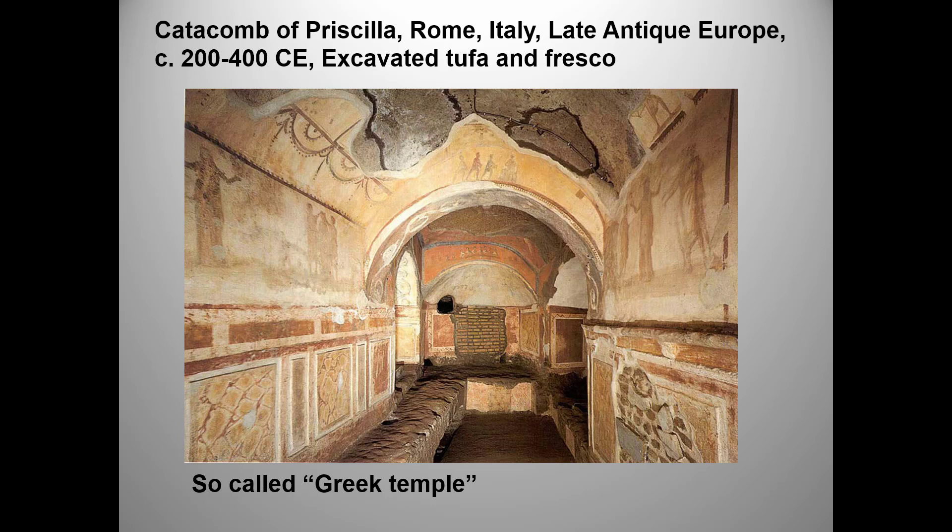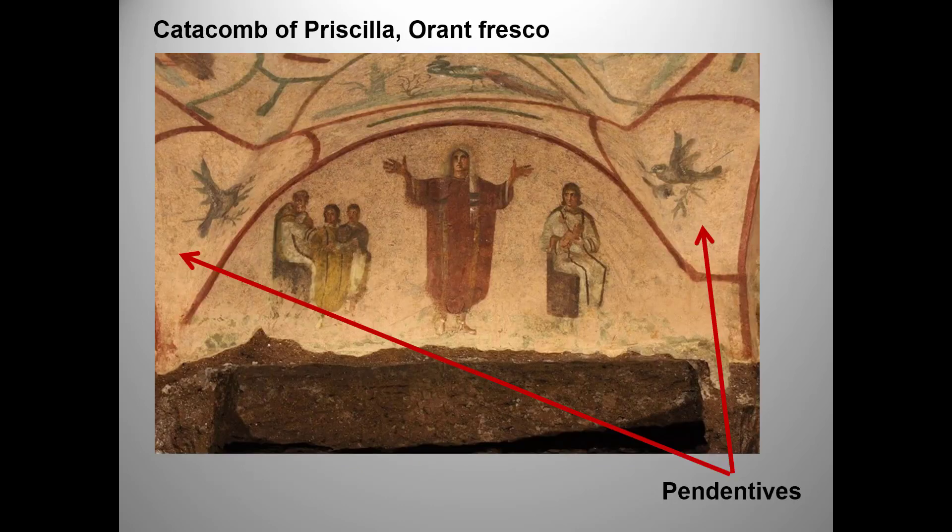Note that what looks like architectural features along the walls is actually just a painted surface — this is first-style Roman painting, and we saw it in Pompeii. The conventional interpretation is that we see the dead woman in three stages of life: getting married on the left, raising children on the right, and praying — that is, the orant pose — in the center.